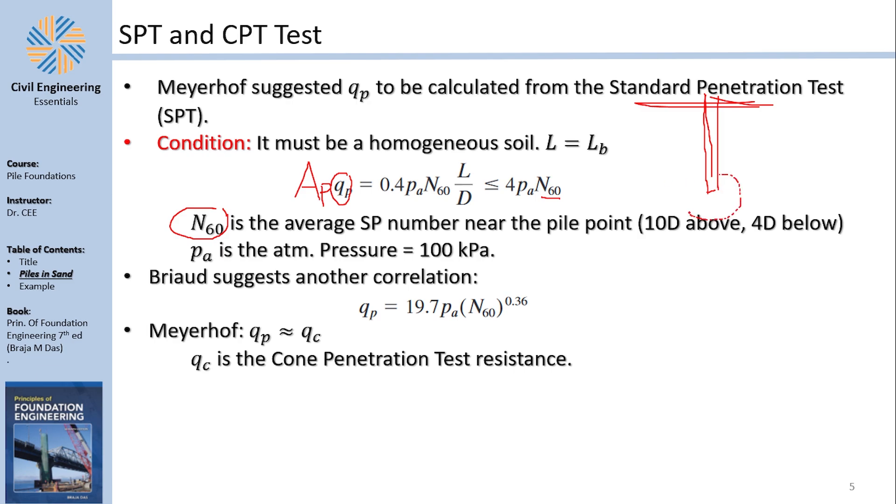Now, what is N60? N60 is not really the SPT number at the soil at the pile tip, but it's the average around the pile tip. Because the bearing capacity is not only at the pile tip, it's in a region around the pile tip. What is this region around the pile tip? It's 10 diameters above and four diameters below. So you take whatever SPT values you have in all those layers and you average them.